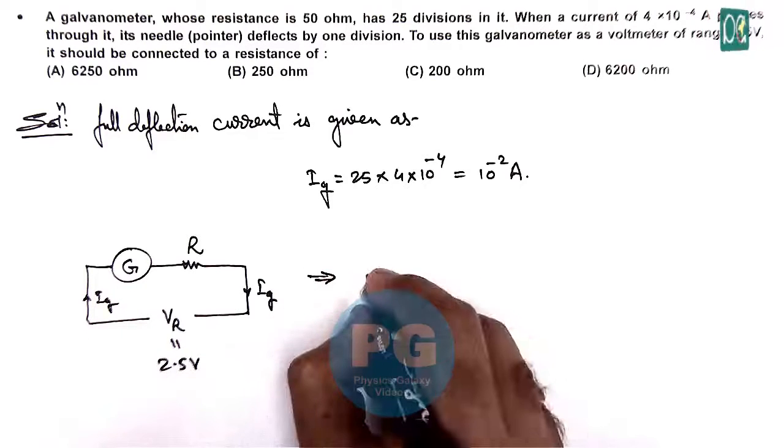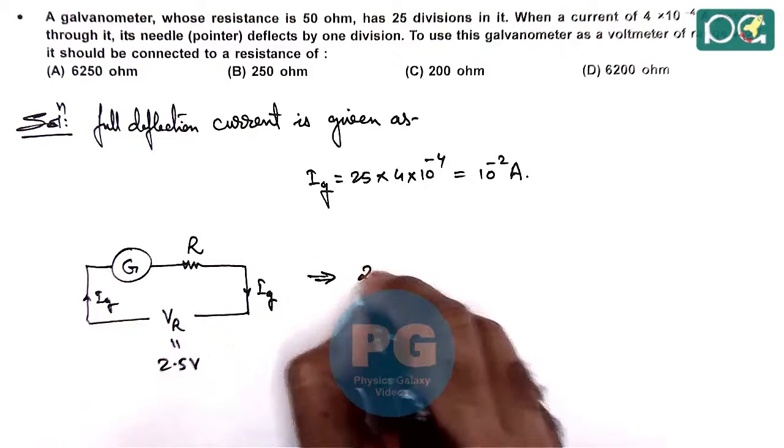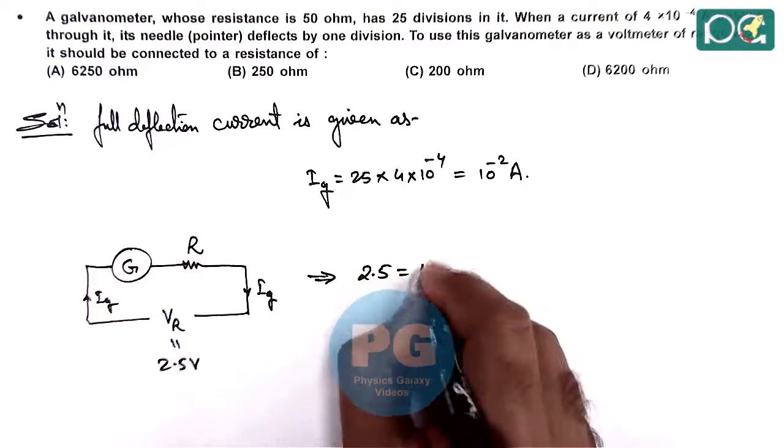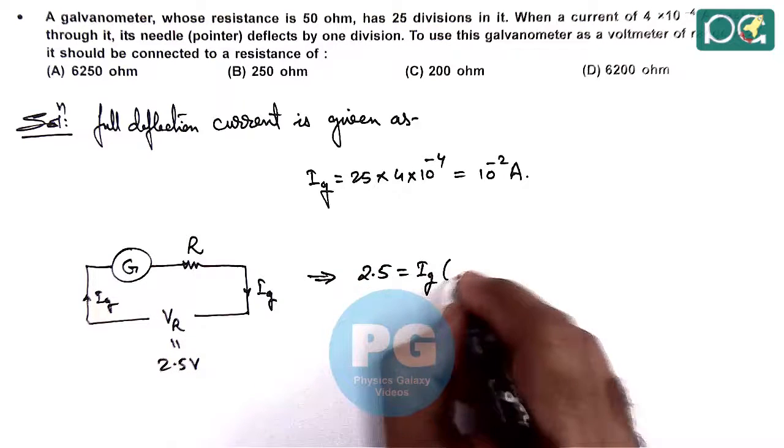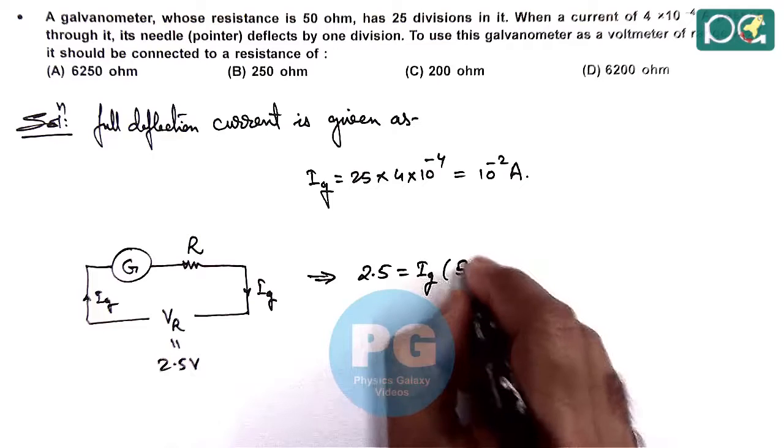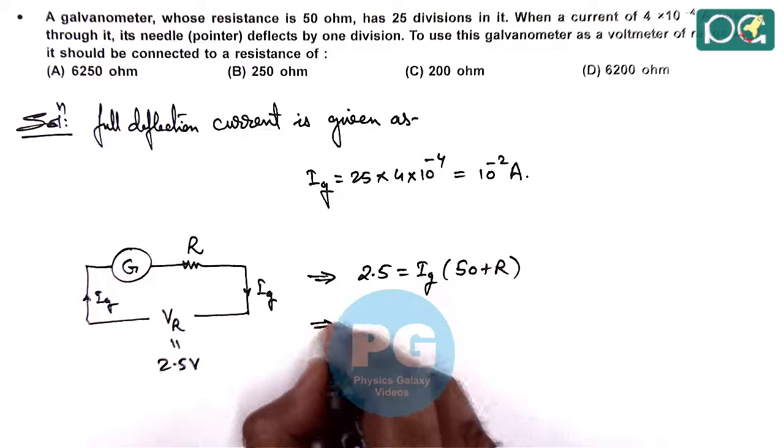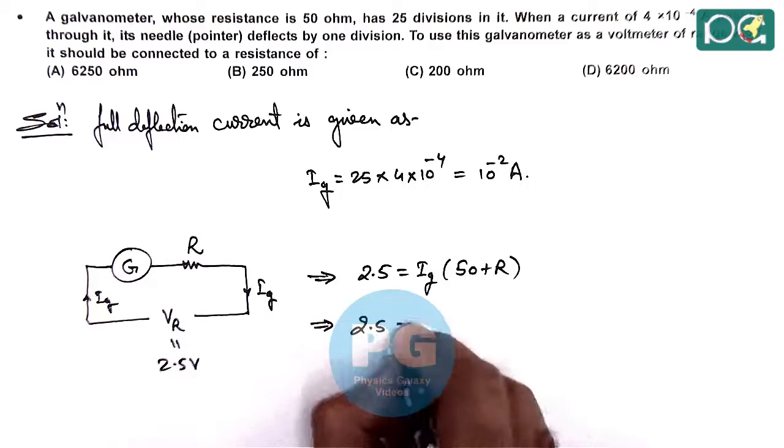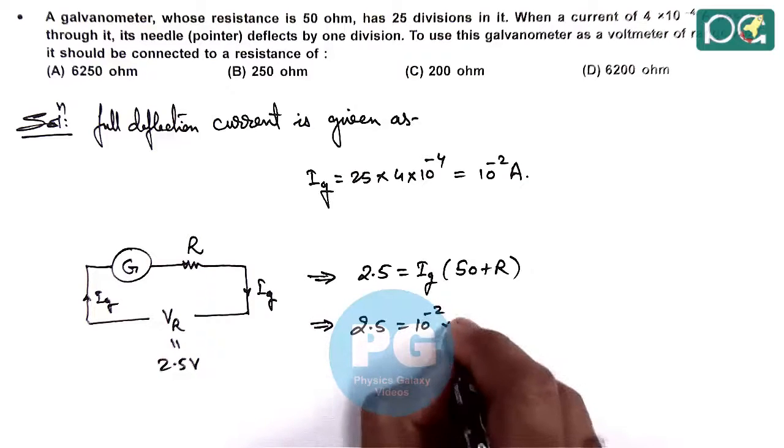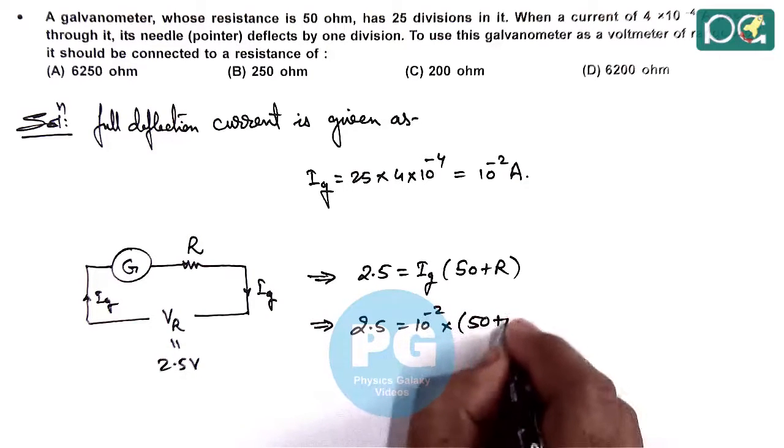Here we use: 2.5 should equal I_g multiplied by the galvanometer resistance, which is 50 plus R. So 2.5 equals 10⁻² multiplied by (50 + R).